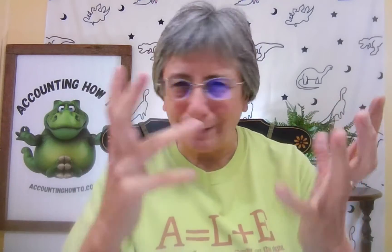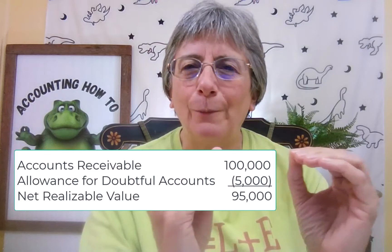Before we even start talking about bonds payable, I want to talk about a couple of other accounts we've dealt with in previous chapters. We had a chapter about accounts receivable and we did that whole allowance for doubtful accounts thing. On the balance sheet, we're going to see accounts receivable — the full amount, what everybody owes you — minus the allowance for doubtful accounts. That gives us what we call the net realizable value of our accounts receivable. That allowance is subtracting from the asset value so that when somebody looks at our financial statements, they're aware of the true value of that account.